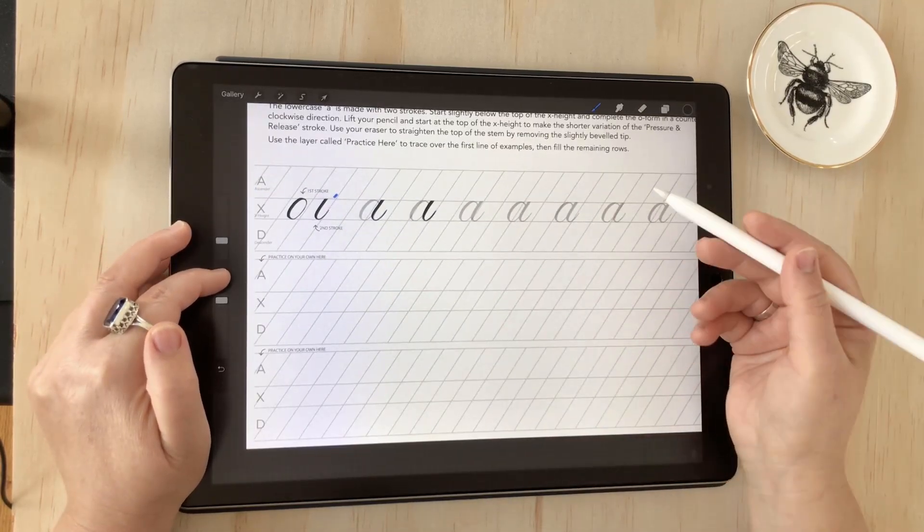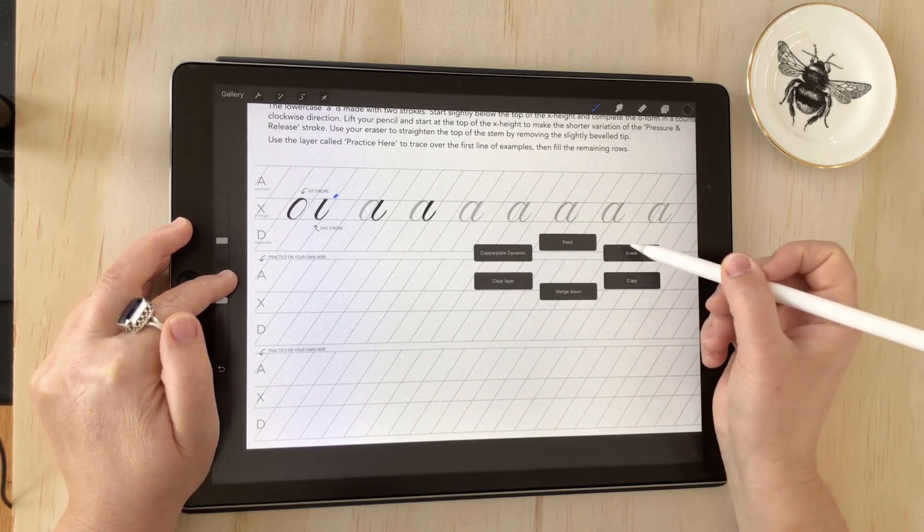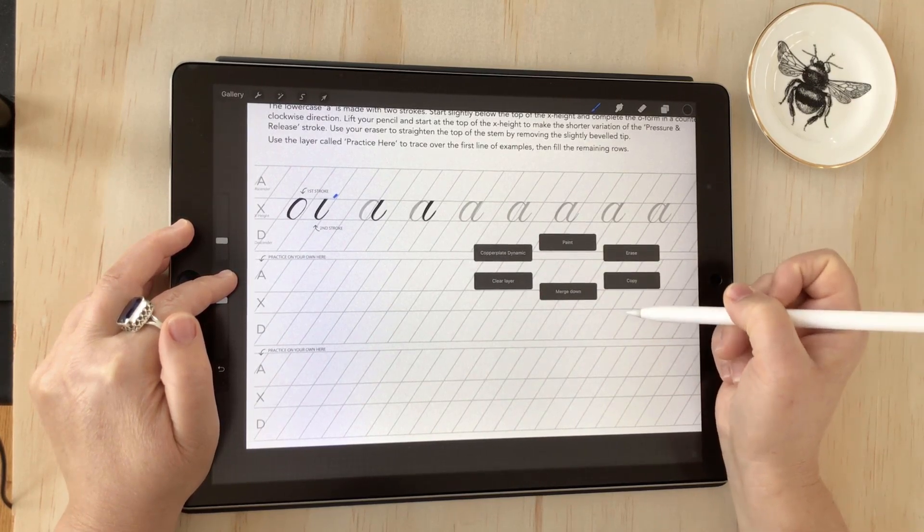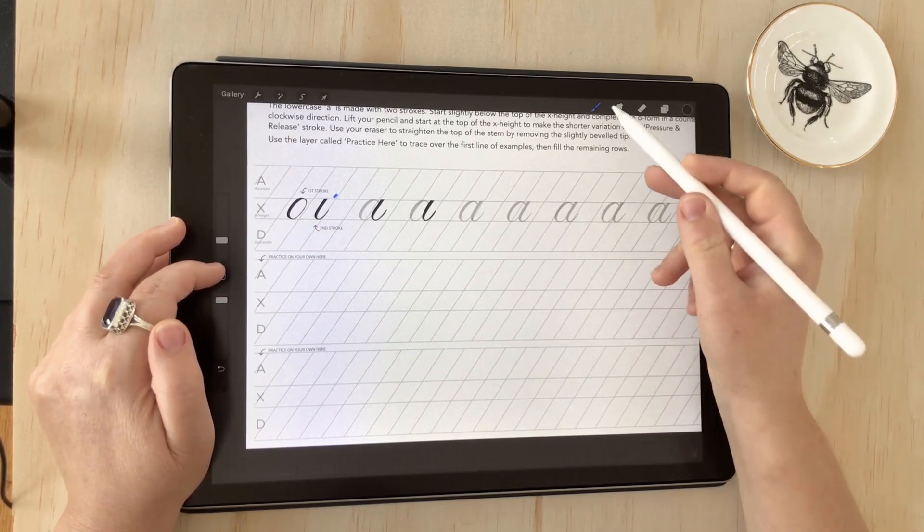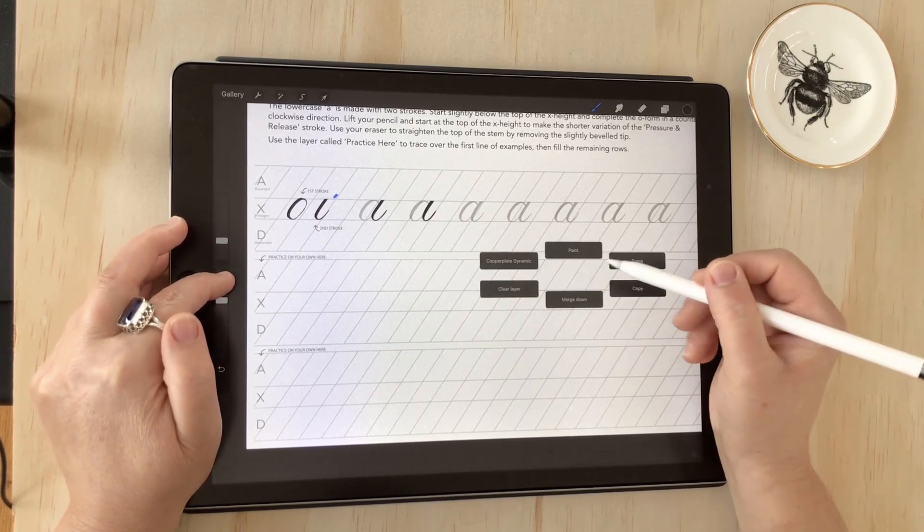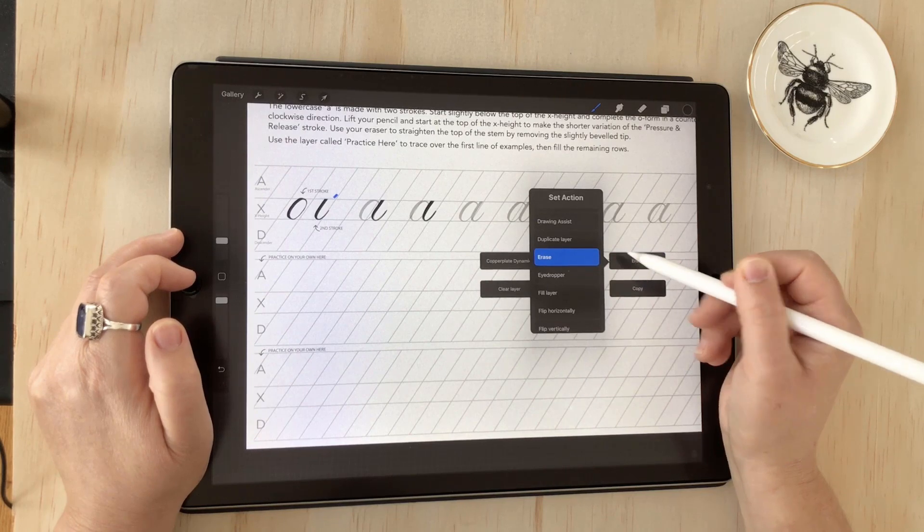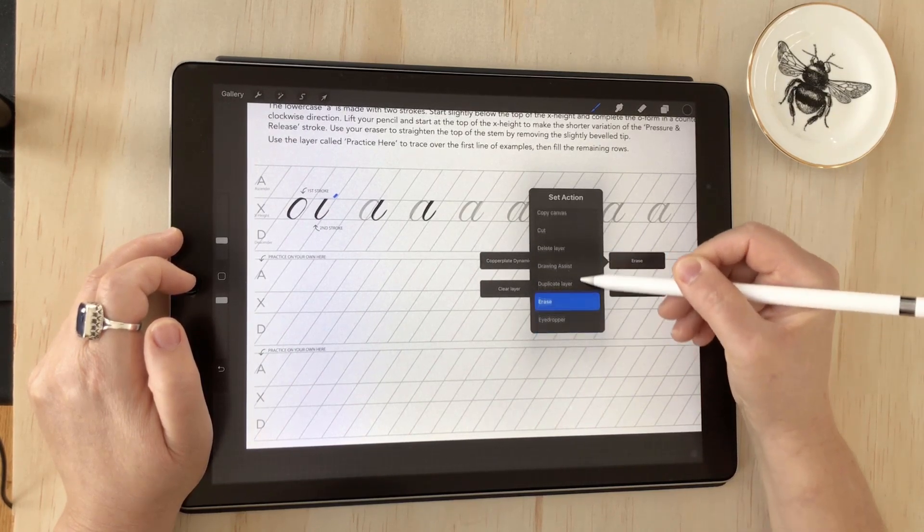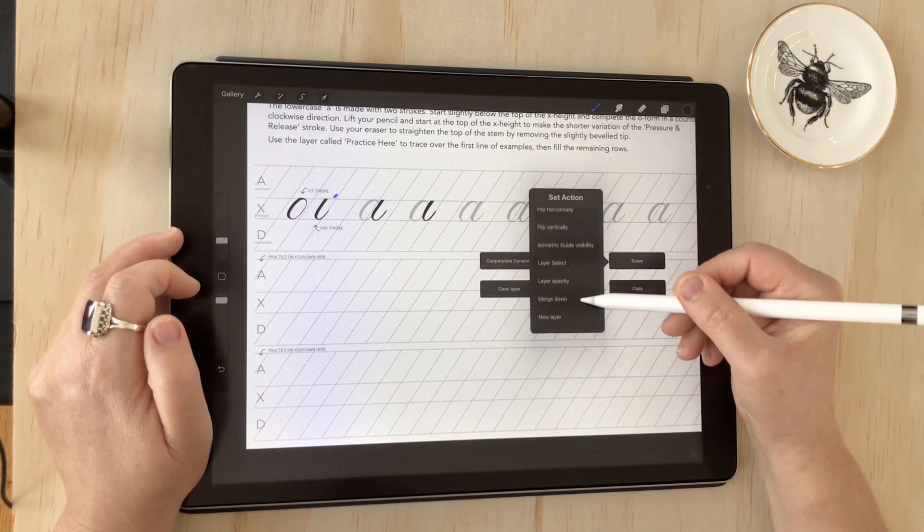So when you first discover Quick Menu, you'll find that the settings might be different to what you see I have here. I've actually set that as paint and eraser, so you can change the preferences just by activating it, then you hold over it and you can see all the different actions that you can choose from.